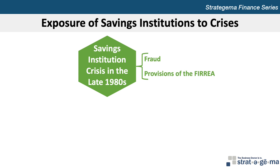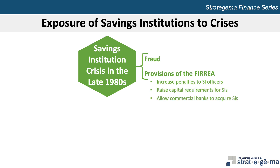To prevent further failures and restore confidence, the Financial Institutions Reform, Recovery, and Enforcement Act, or FIRREA, was enacted in 1989. It increased penalties for officers convicted of fraud, raised capital requirements for SIs, allowed commercial banks to acquire SIs, and required SIs to sell off any holdings of junk bonds.